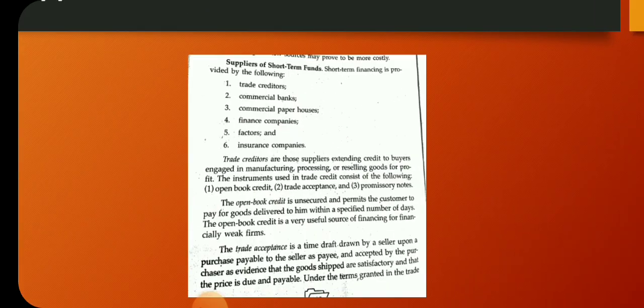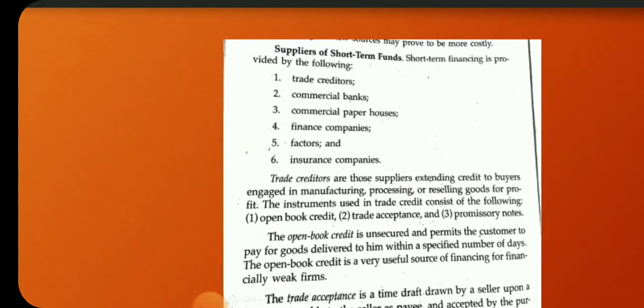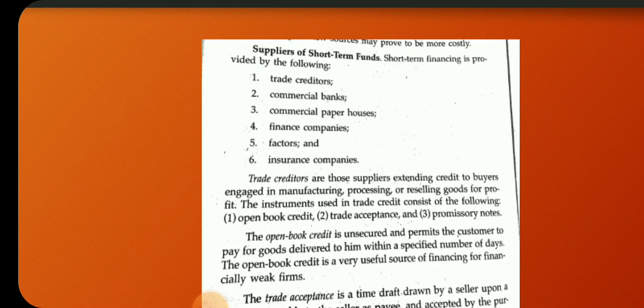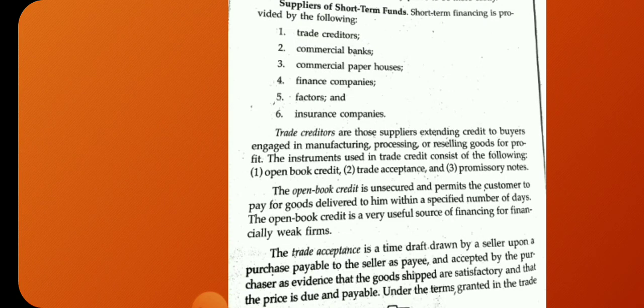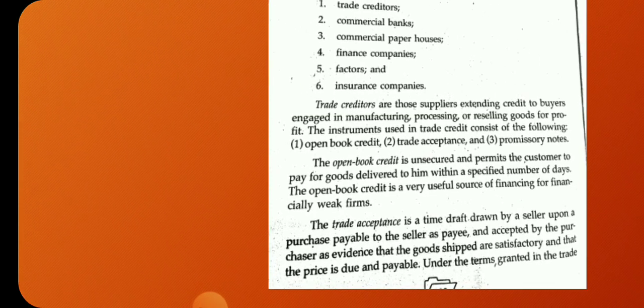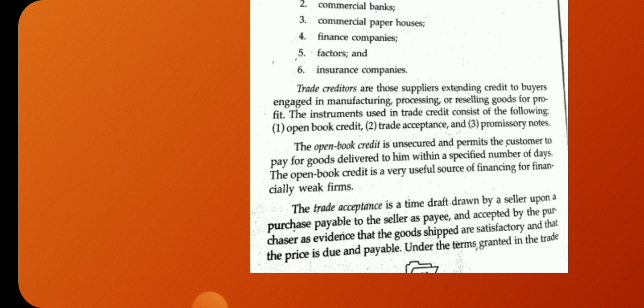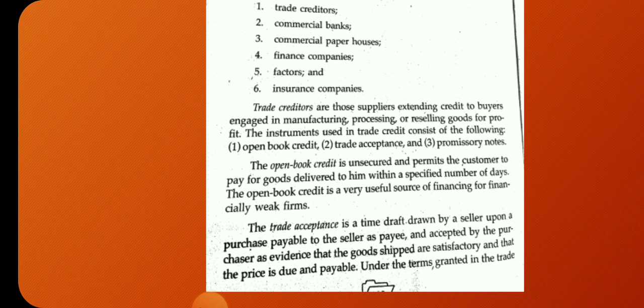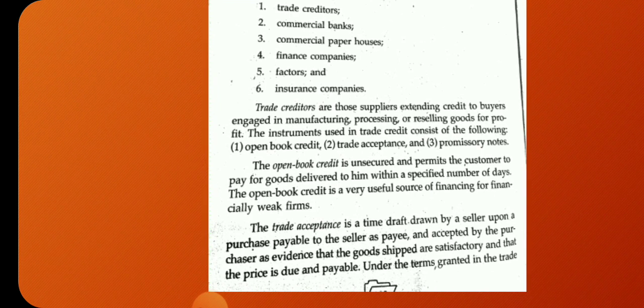Regarding the suppliers of short-term funds: short-term financing is provided by trade creditors, commercial banks, commercial paper houses, finance companies, factors, and insurance companies. Trade creditors are those suppliers extending credit to buyers engaged in manufacturing, processing, and selling goods for profit.